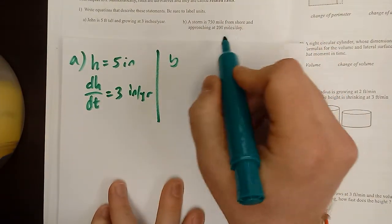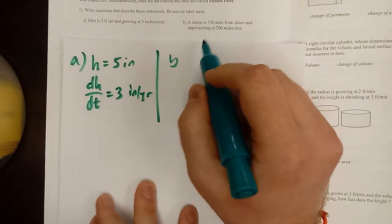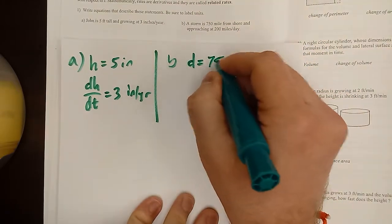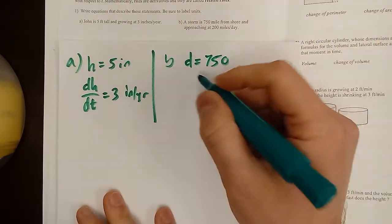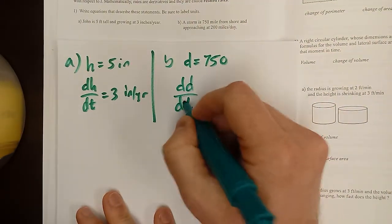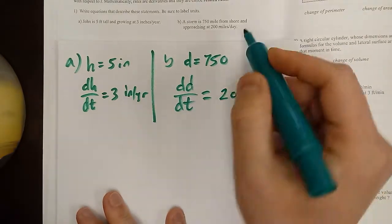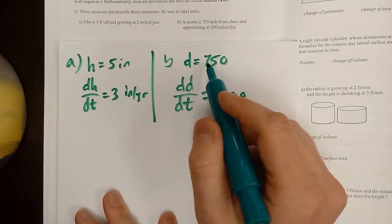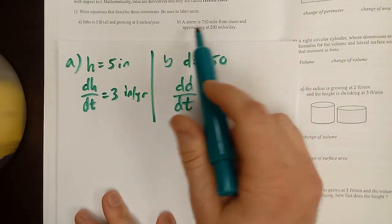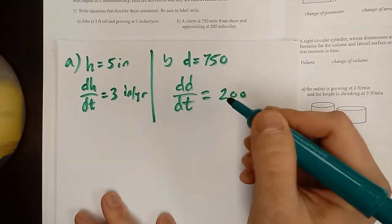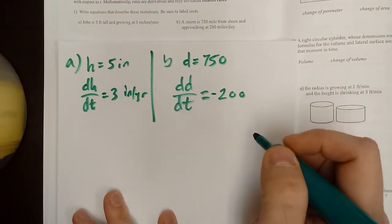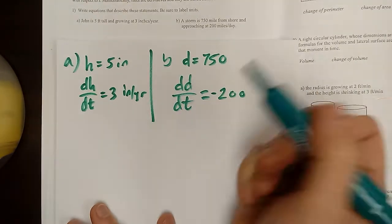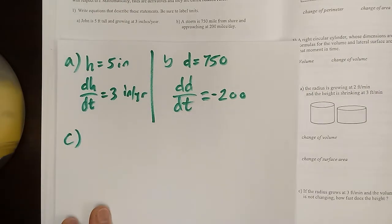Part B says a storm is 750 miles from shore and approaching at 200 miles per day. We could say distance = 750. Now, distance is a really bad letter to use because then I have to write dD/dT. If I said the change in distance was 200, that's not true, because the next day we'd be at 950. But it says it's getting closer — approaching — so we'd want to say dD/dT = −200.